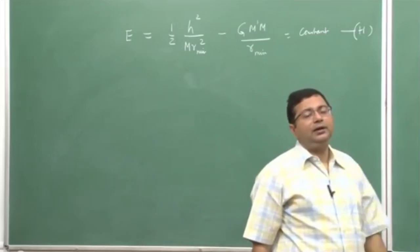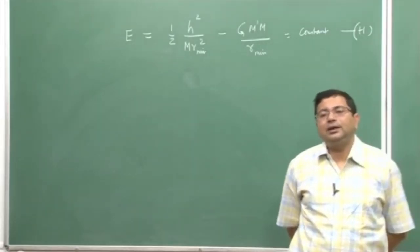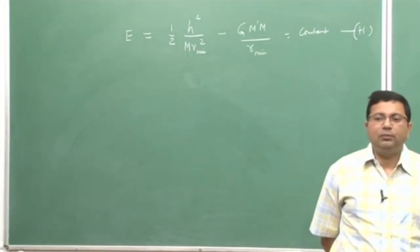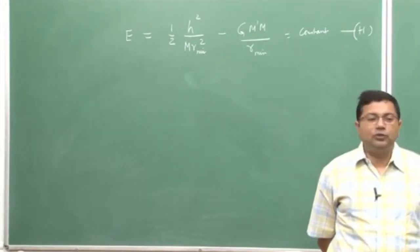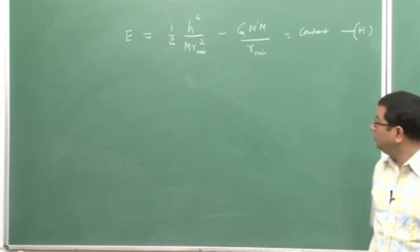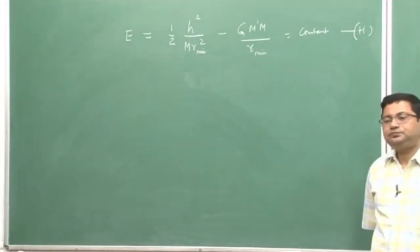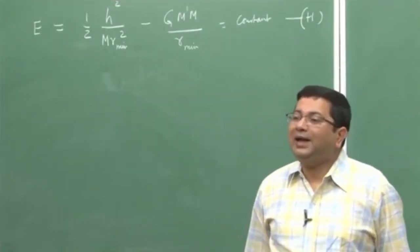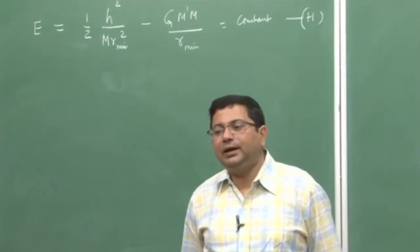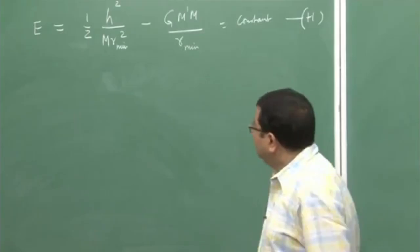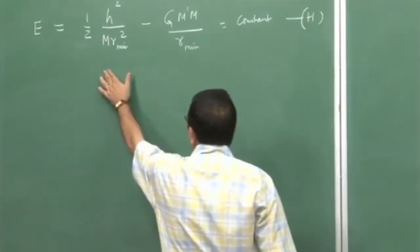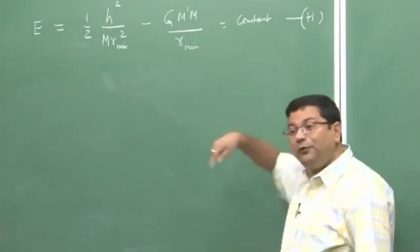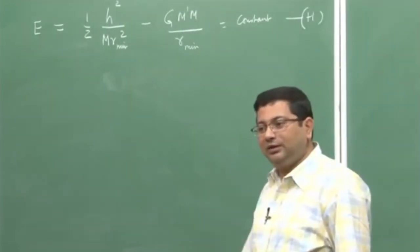The first term came from the kinetic energy of the vehicle, and the second term came from the potential energy of the vehicle, where G is the universal gravitational constant and M-dash is the mass of the heavenly body. Since in our orbital mechanics discussion we are considering that thrust has been given impulsively, after that there is no thrust — the vehicle moves purely due to gravitational force. If thrust is zero, there is no net energy being added, so the total energy remains constant. This is the energy of the vehicle at its minimum point, which is constant, and so it is the same everywhere in the orbit.